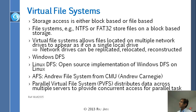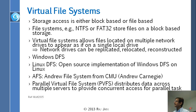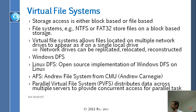Virtual file systems: storage access is either block-based or file-based. There are many virtual file systems — file systems located on a different network. In Windows these are called distributed file systems (DFS), meaning the files are not physically on your computer but on another computer you access remotely. Linux also has a DFS. There is AFS — Andrew File System from Carnegie Mellon, named after Andrew Carnegie. And there is a parallel virtual file system, which distributes data across multiple servers for concurrent access — similar to RAID but over a network.